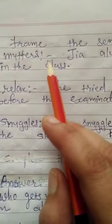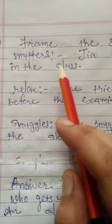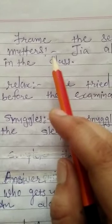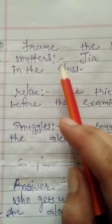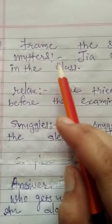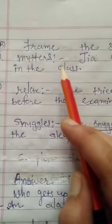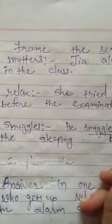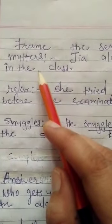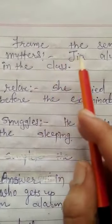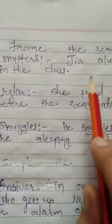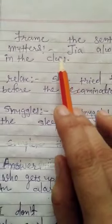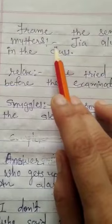Hi students, in the previous video we understood the many exercises of Neha's album book, and now in this video we go for another exercise. Here we start from 'Frame the Sentence' — you make sentences on given words. The first one is 'matters'.